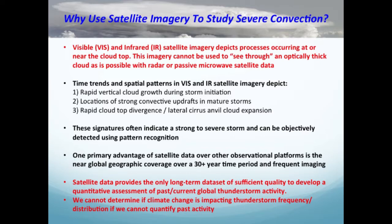The primary advantage of satellite data over other platforms is nearly global geographic coverage over a 30-year period with frequent imaging, allowing spatial maps of where severe weather tends to occur. Satellite data provides the only long-term dataset of sufficient quality to develop a quantitative assessment of past and current thunderstorm activity — instruments are fairly well calibrated to themselves, and with de-biasing you can say quite a bit over time. We cannot determine if climate change is impacting thunderstorm frequency and distribution if we cannot quantify past activity.